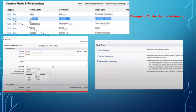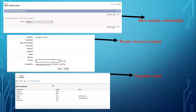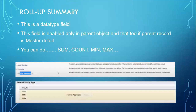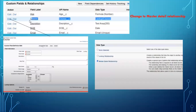Here you can see: first, we created a new look-up relationship where the parent record is empty. Then we populated the data so all child records have the parent data. Then we changed the master-detail relationship to look-up relationship. Then we changed look-up to master. It is clear now — changing look-up to master.